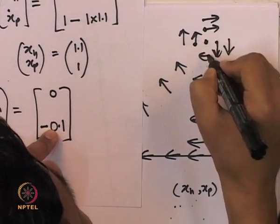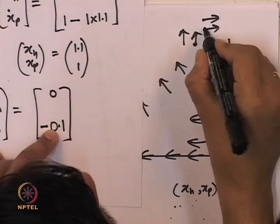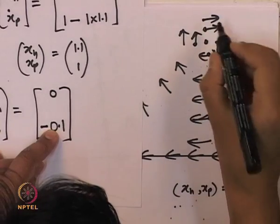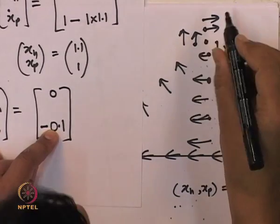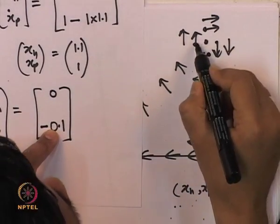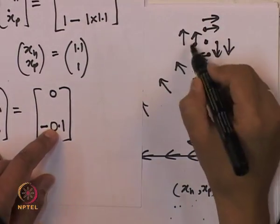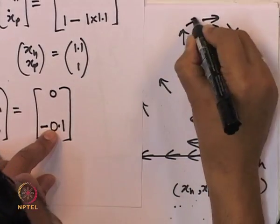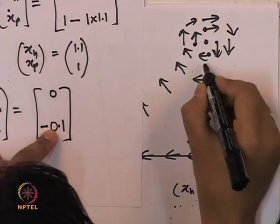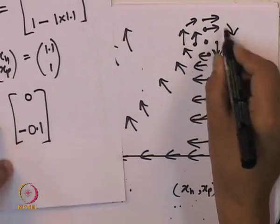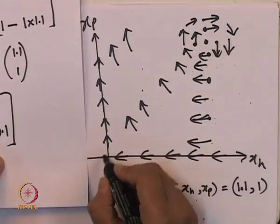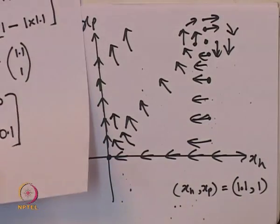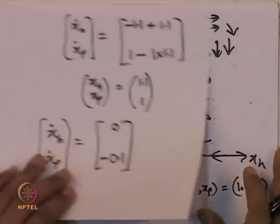There are periodic orbits close to (1,1), but the (0,0) point looks like a saddle point. Let us verify this by linearizing the system at each of these two equilibrium points.